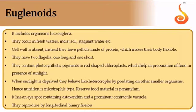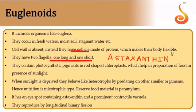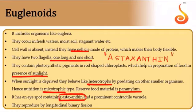Euglena shows mixotrophic nutrition — photosynthetic in sunlight, heterotrophic in the dark. Its reserve food material is paramylon. It has a prominent contractile vacuole because it is a freshwater organism, and it reproduces by longitudinal binary fission.